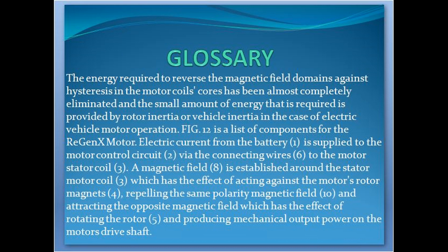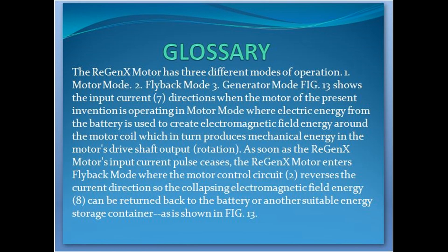FIG. 12 is a list of components for the Regenx motor. Electric current from the battery (1) is supplied to the motor control circuit (2) via the connecting wires (6) to the motor stator coil (3). A magnetic field (8) is established around the stator motor coil (3), which has the effect of acting against the motor's rotor magnets (4), repelling the same polarity magnetic field (10) and attracting the opposite magnetic field, which has the effect of rotating the rotor (5) and producing mechanical output power on the motor's drive shaft. The Regenx motor has three different modes of operation: one, motor mode; two, flyback mode; three, generator mode.